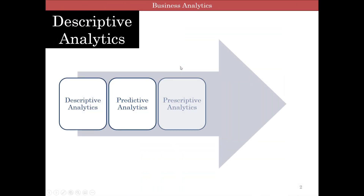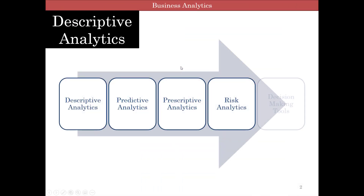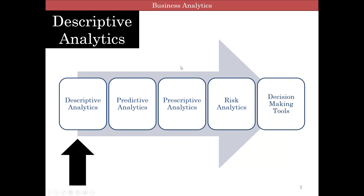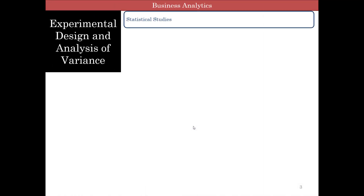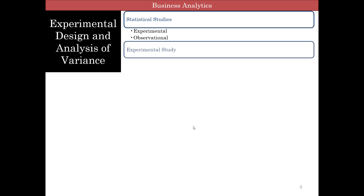We talked about the four different kinds of analytics. We said we are descriptive, but really we are now well into the predictive analytics part. There is some debate on whether we are in predictive or descriptive, so for the time being let's talk about it being in between. Statistical studies can be split into two: experimental and observational.